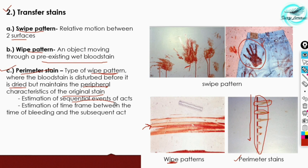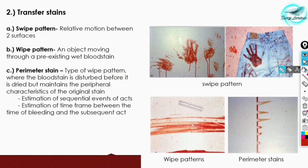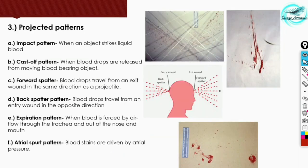Through the perimeter stain we can estimate the time frame between the time of bleeding and the subsequent act. That covers transfer stains. Projected patterns are the patterns formed due to an external force other than the force of gravity. They are further divided into the impact pattern, cast-off pattern, forward spatter, and back spatter.